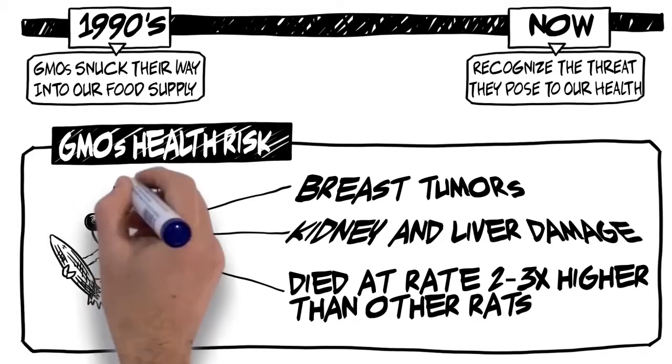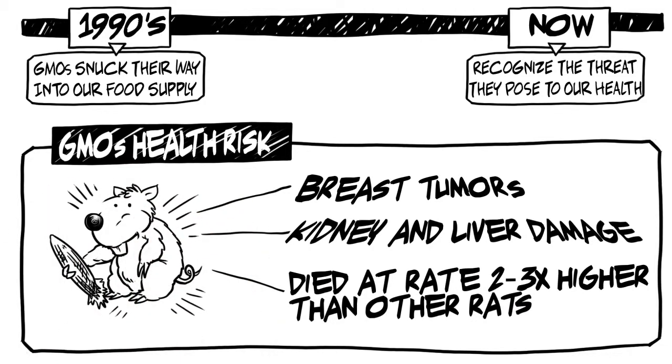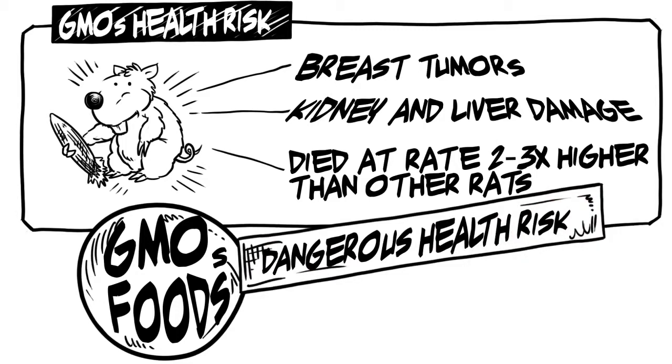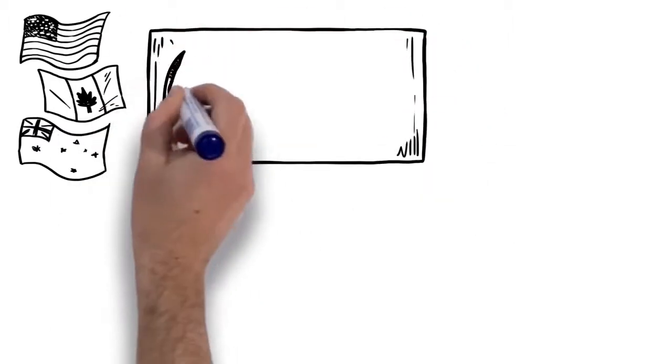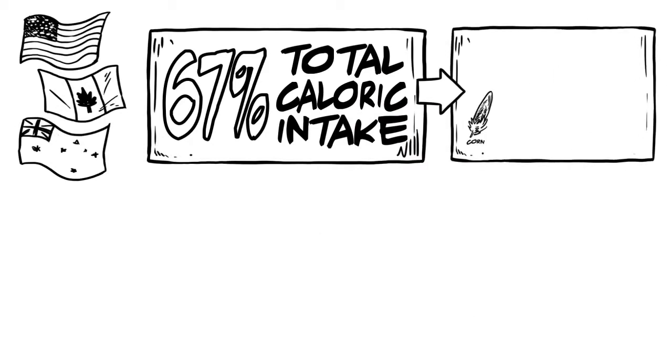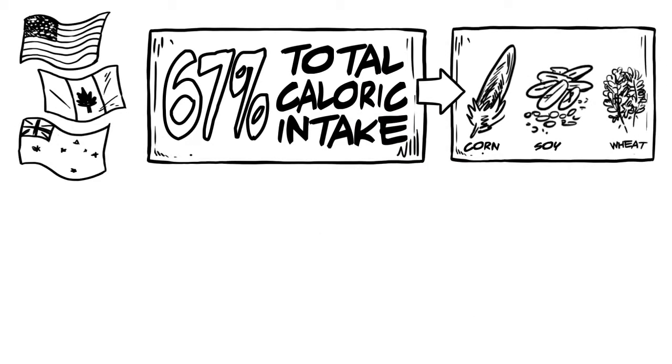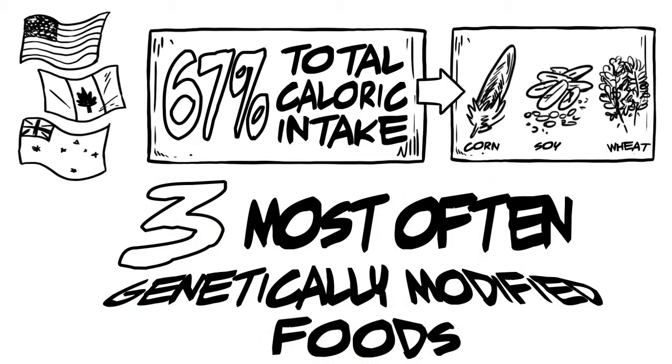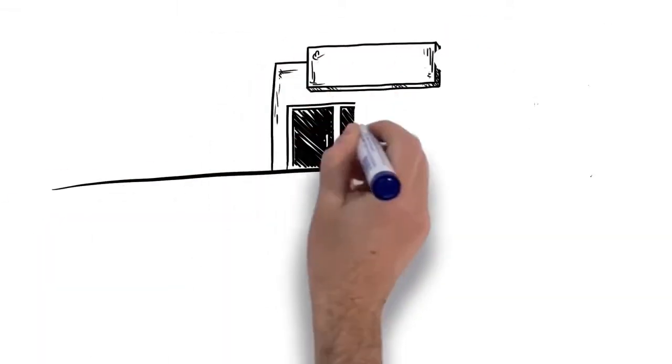Another 10-year genetically modified feeding study done on rats showed that GM foods also cause obesity. Genetically modified foods are not just a dangerous health risk, but they're also making us fat. Currently, the average adult in the US, Canada, and Australia gets approximately 67% of their total calorie intake from only three foods: corn, soy, and wheat and their derivatives. And the three most often genetically modified foods are corn, soy, and wheat. That's scary.